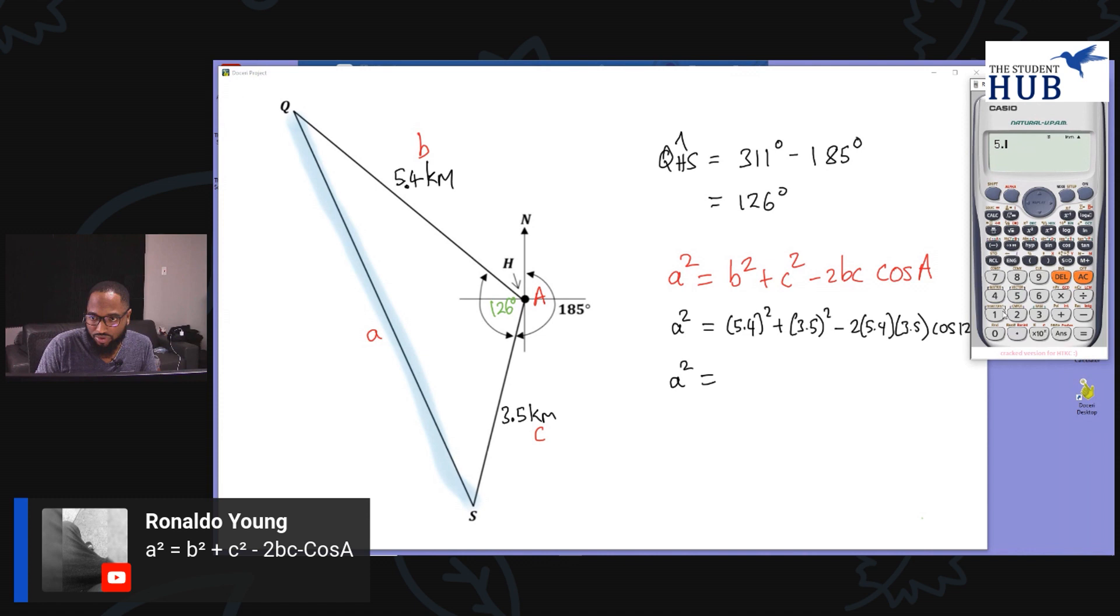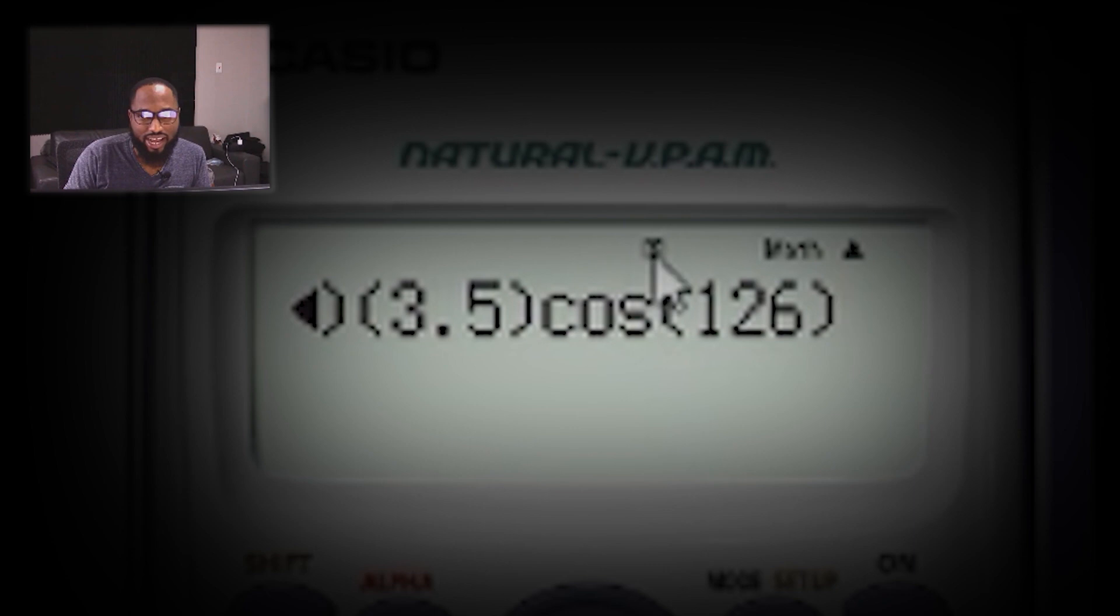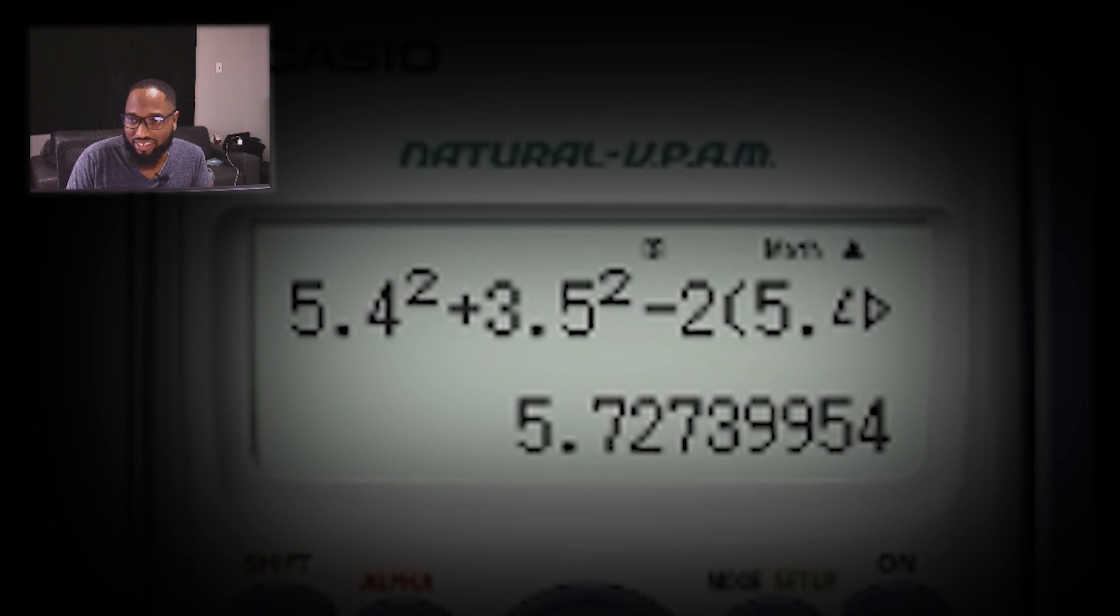Zoom in really closely. So a² = 5.4² + 3.5² - 2 × 5.4 × 3.5 × cos 126. I'm seeing here an R, a sneaky little R. That's radians. If I press that and write that answer I am wrong.